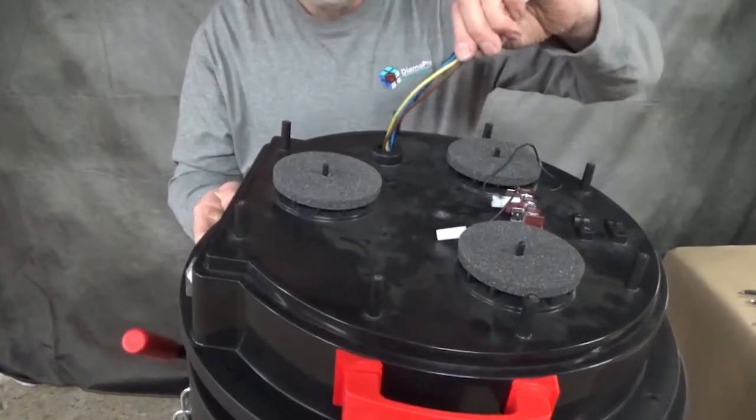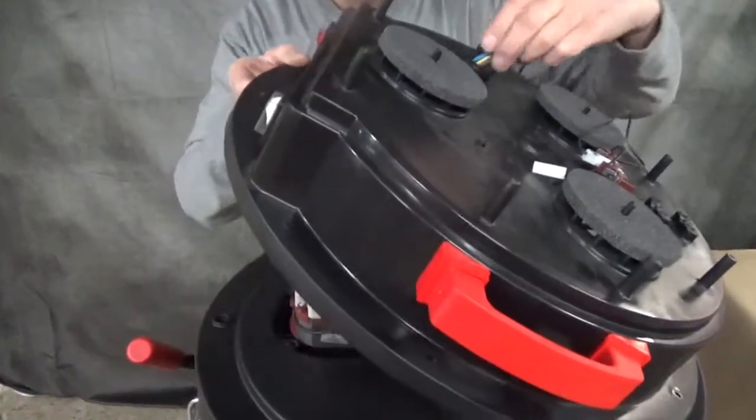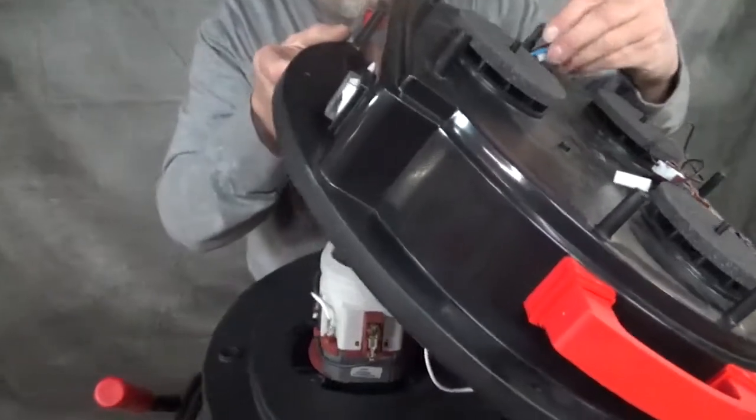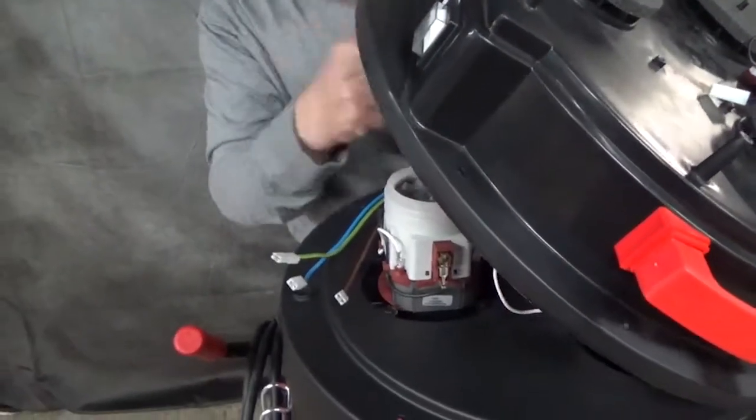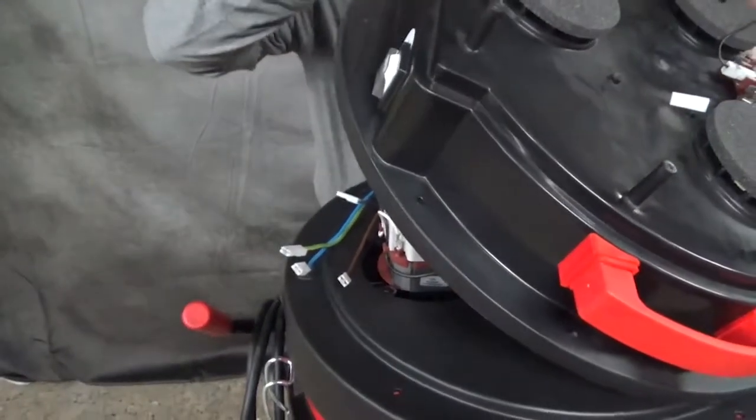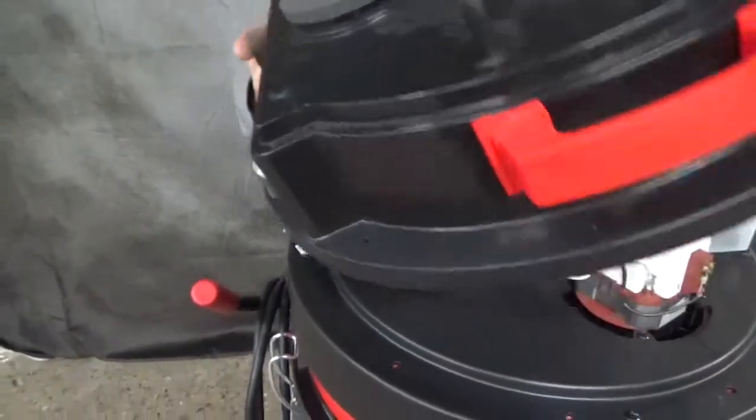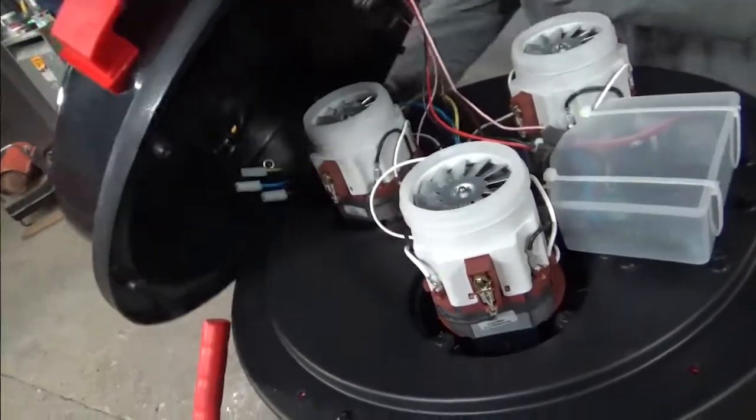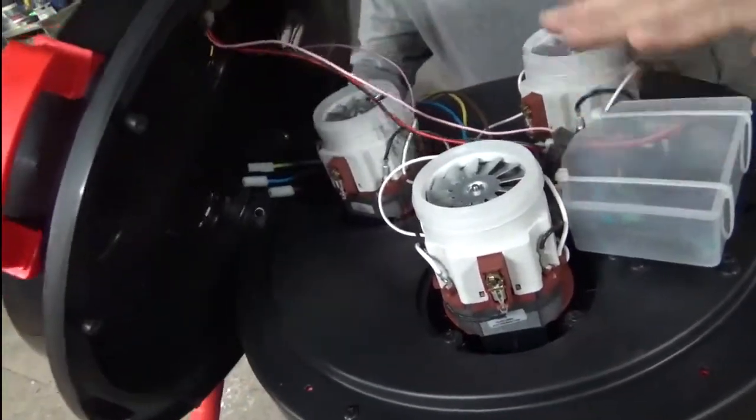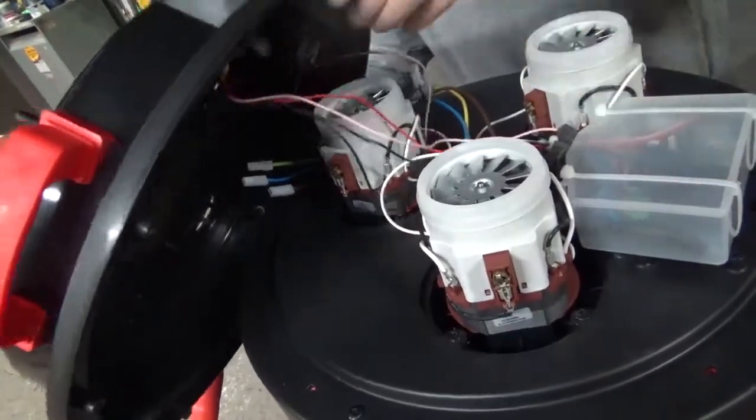While doing so, feed the wires through the opening in the cover so they come out on the bottom side or underside of the cover. Like so. Carefully lift the cover and position it so that you can access the electronic board.